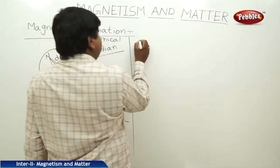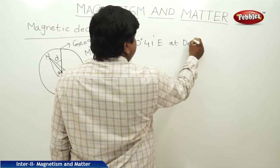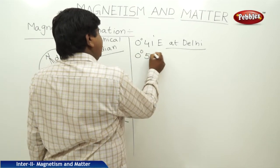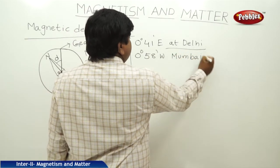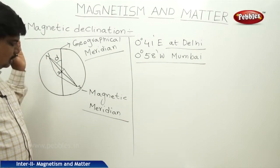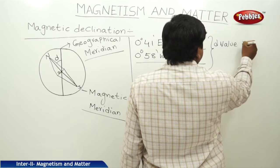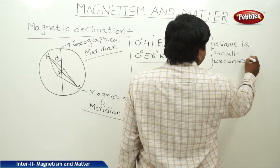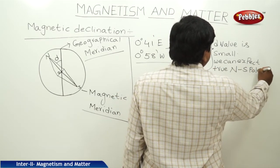In India, at Delhi the magnetic declination is 0 degrees 41 minutes east, and at Mumbai it is 0 degrees 58 minutes west. At these two places, the magnetic declination has very low values. That is why we can expect the true north and south poles — when the d value is small, we can expect the true north and south poles of magnetism.